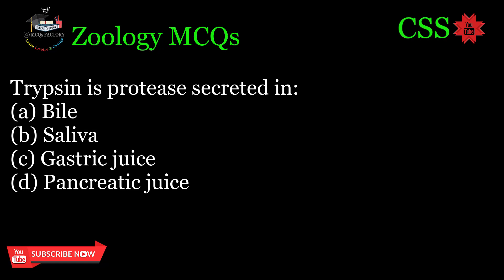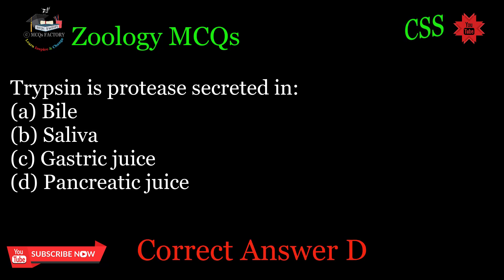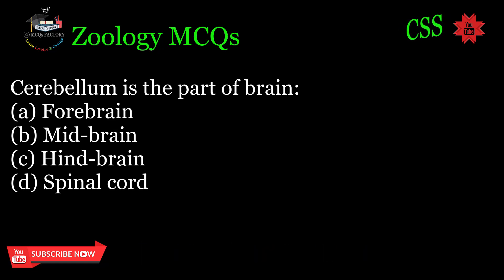Trypsin is a protease secreted in: A. Bile, B. Saliva, C. Gastric juice, D. Pancreatic juice. Correct answer: D.